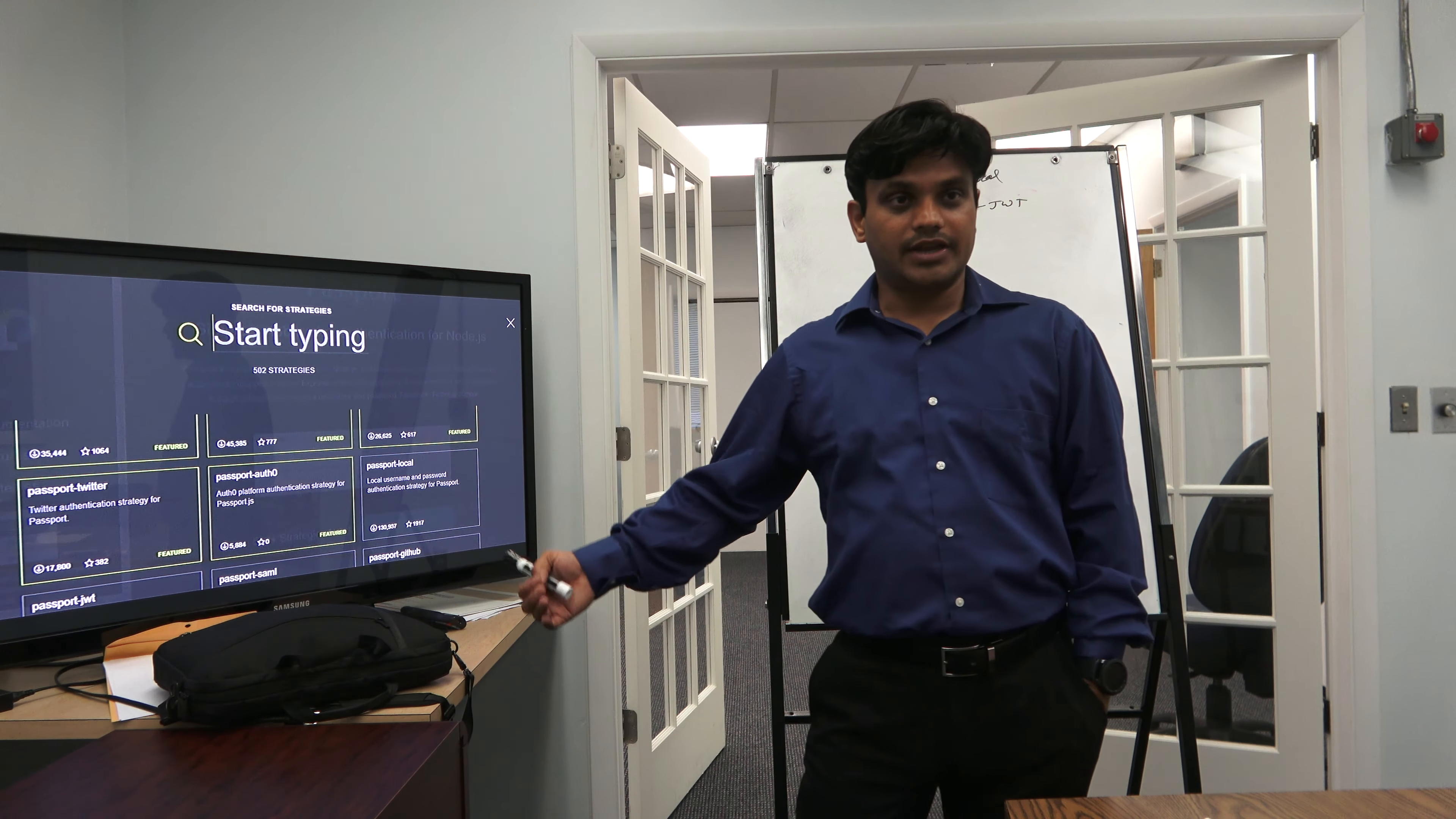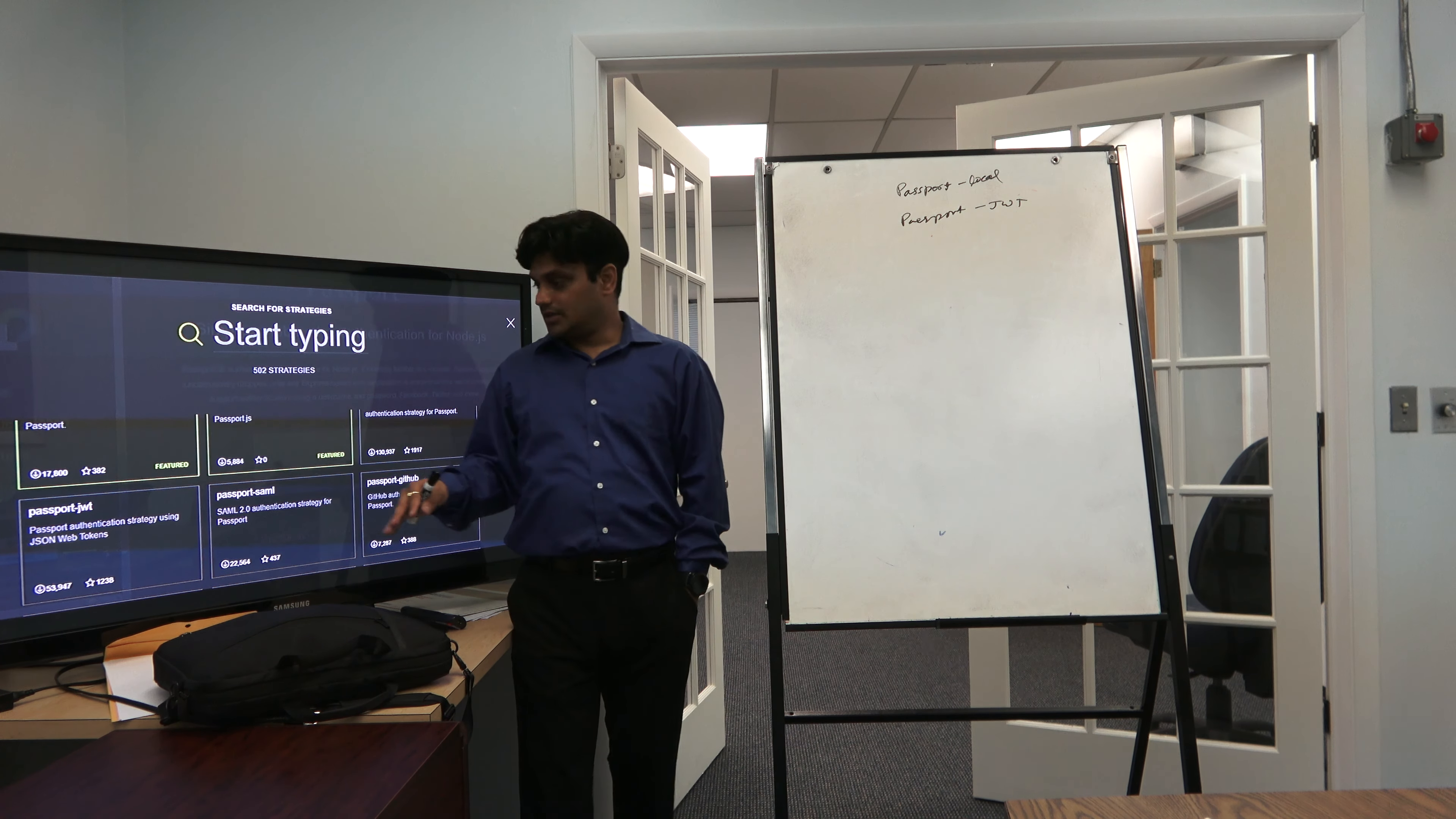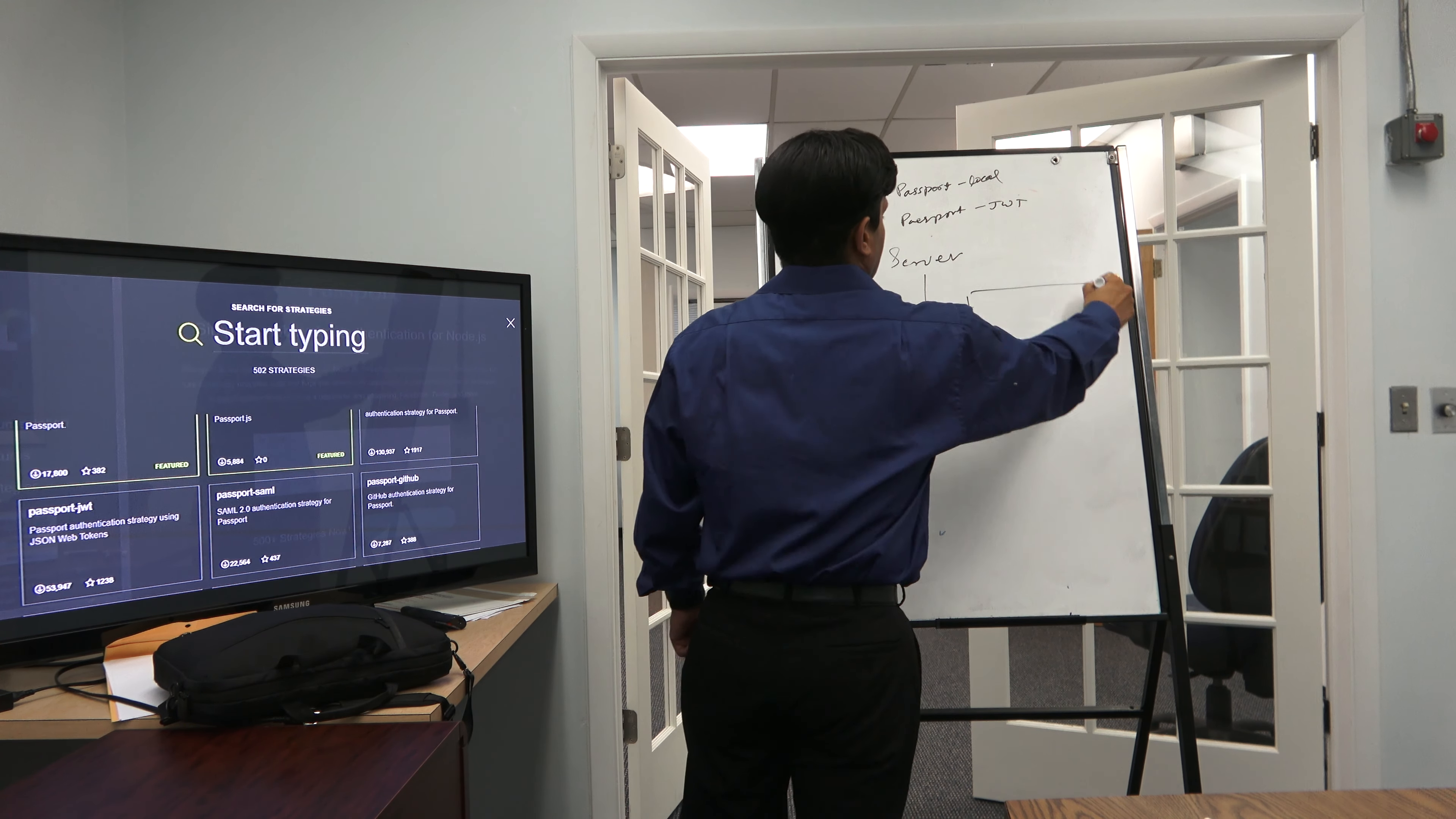For now, we will use passport-local for our local login first time when you want to check in your database that is local. Then we will use passport-jwt in order to validate the JSON web token. So in our next class when we will do coding, I'll ask you to do this homework: just check them out, the flow, how they do, what are the functions, how do you call it, so that you will be a little bit prepared.